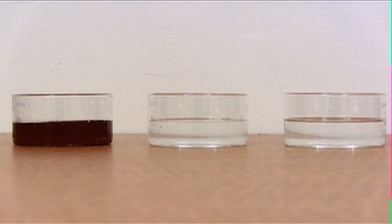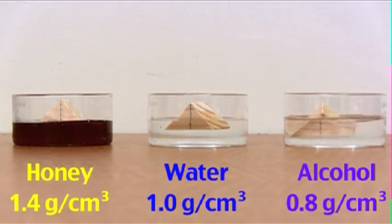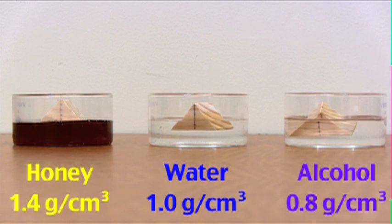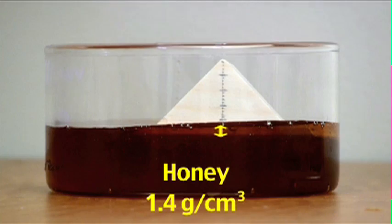Here we're placing three identical wooden blocks in three liquids with different densities. The liquids are honey, water, and rubbing alcohol. Notice how the more dense a liquid is, the higher the block floats. Hence we see the importance of the liquid's density on the buoyancy.